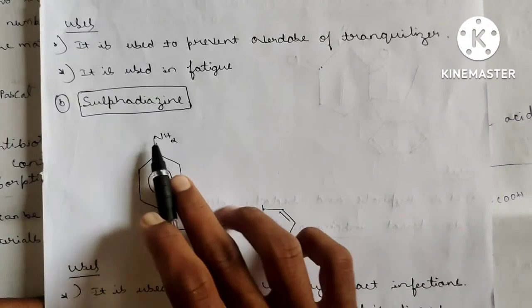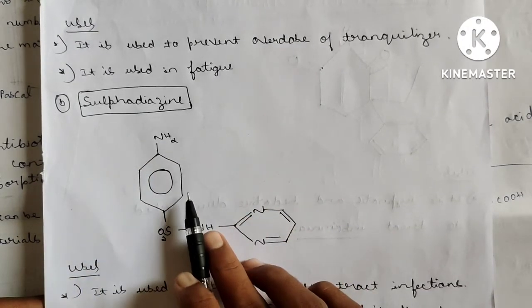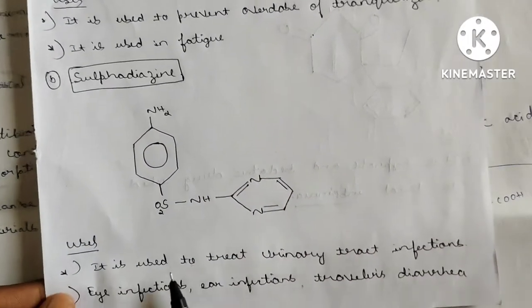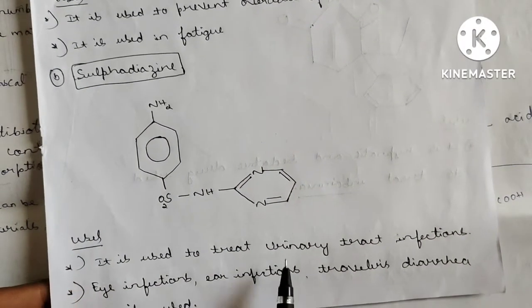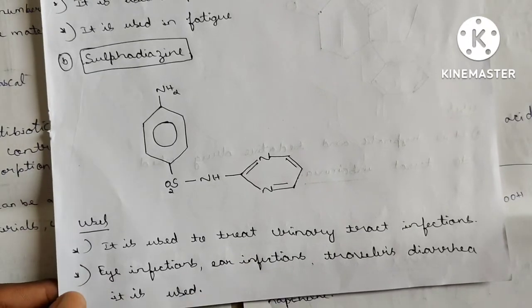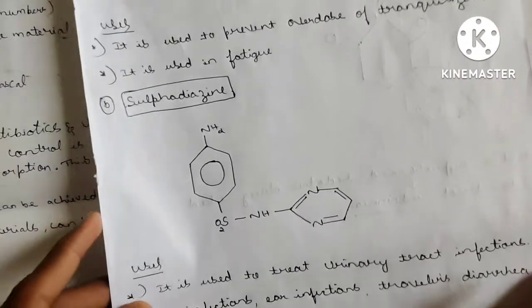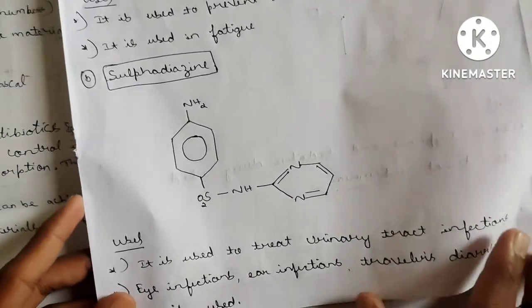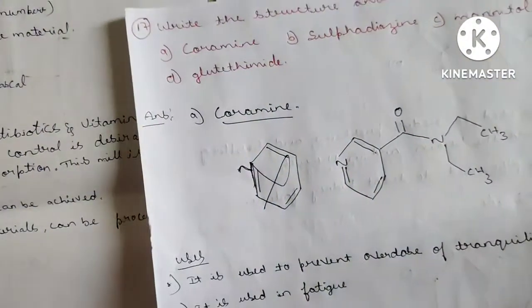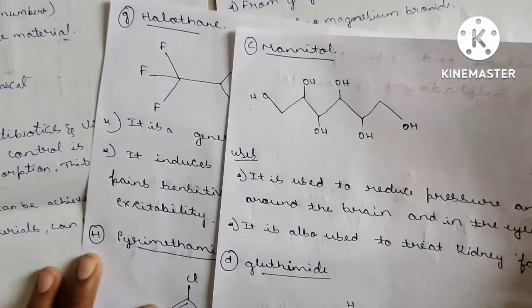Sulfadiazine: Two benzene rings with attachment of an NH2 group. It is used to treat urinary tract infection, eye infection, and traveler's diarrhea. It is available in the market as co-trimoxazole (Bactrim DS tablet).